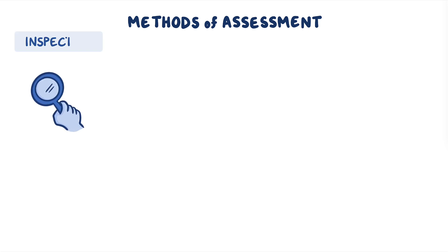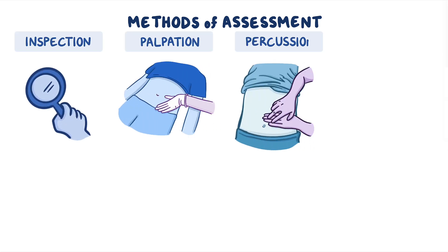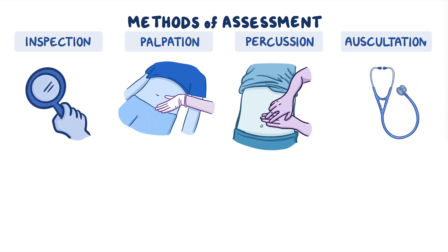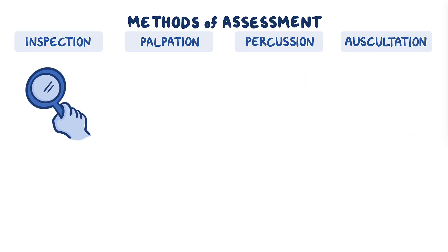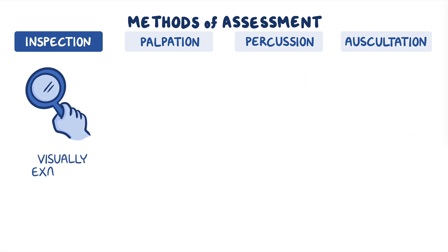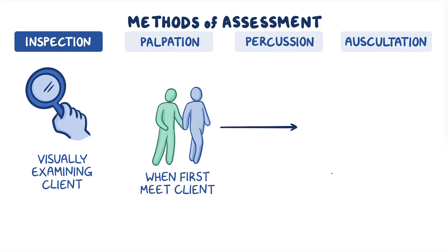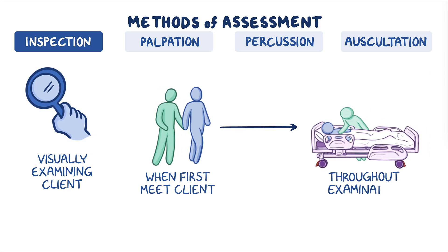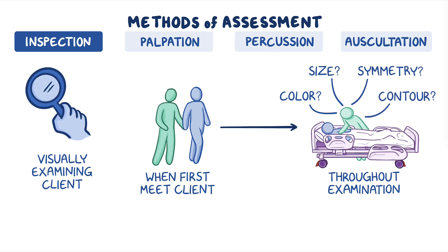There are four major methods of assessment: inspection, palpation, percussion, and auscultation. Inspection is performed by visually examining your client. Inspection begins when you first meet your client and will continue throughout the examination as you take note of characteristics like color, size, symmetry, and contour.